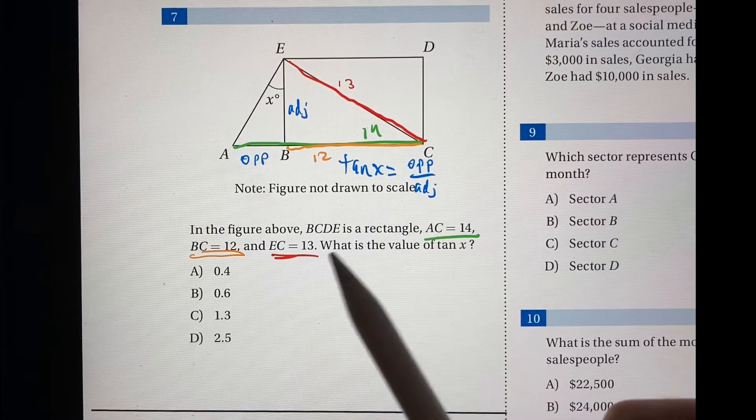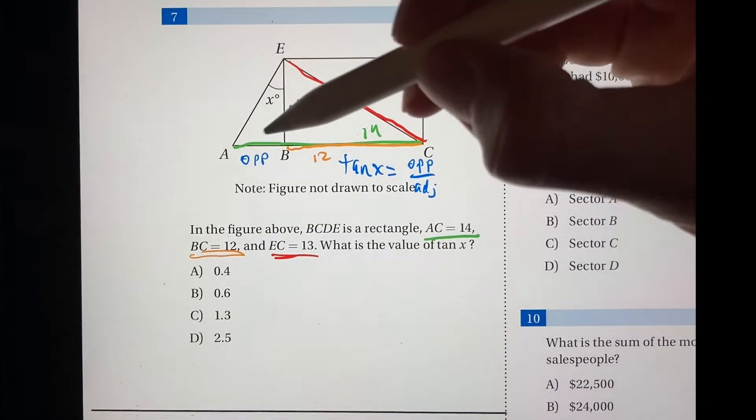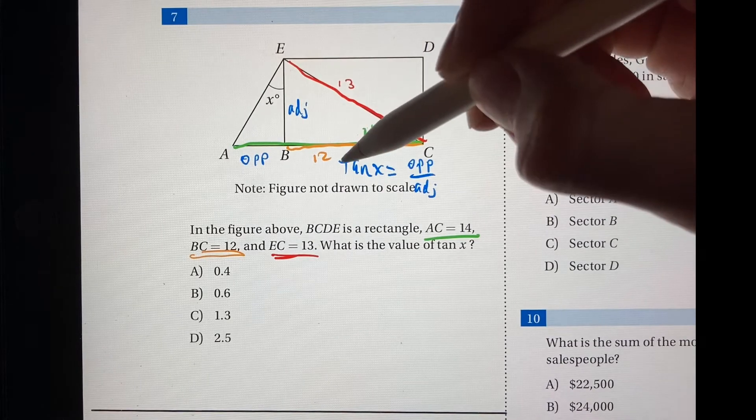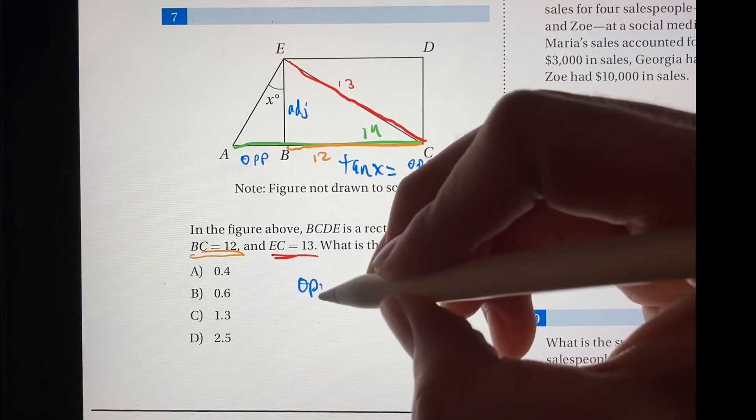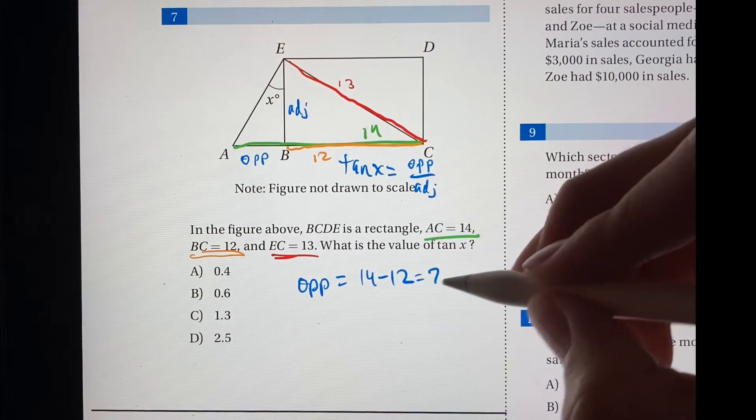So now that we wrote down all the side lengths, let's figure out what the problem wants. We can solve for the opposite side right here just by subtracting 14 and 12. So the opposite side equals 14 minus 12, which is equal to 2.